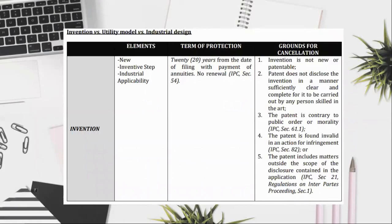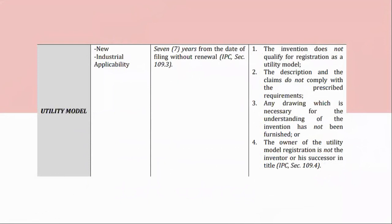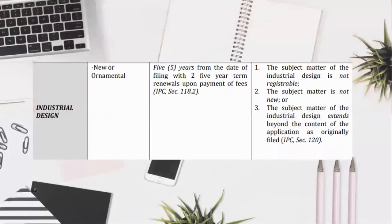Utility Model: New, Industrial Applicability; 7 years from the date of filing without renewal, IPC, Section 109.3. Grounds for cancellation: (1) the invention does not qualify for registration as a utility model; (2) the description and the claims do not comply with the prescribed requirements; (3) any drawing which is necessary for the understanding of the invention has not been furnished; or (4) the owner of the utility model registration is not the inventor or his successor in title. IPC, Section 109.4. Industrial Design: New or Ornamental; 5 years from the date of filing with two 5-year term renewals upon payment of fees, IPC, Section 118.2. Grounds for cancellation: (1) the subject matter of the industrial design is not registrable; (2) the subject matter is not new; or (3) the subject matter extends beyond the content of the application as originally filed. IPC, Section 120.